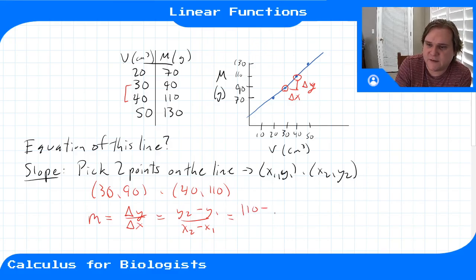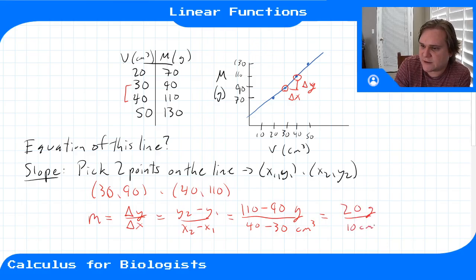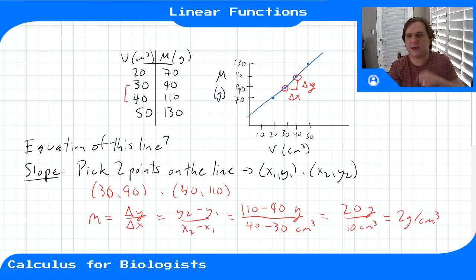So that would be 110 minus 90 grams, divided by 40 minus 30 centimeters cubed. So up top, we have 20 grams. On the bottom, we have 10 centimeters cubed. So that gives us 2 grams per centimeter as our slope. And you notice the units of this suggest that that's a density.